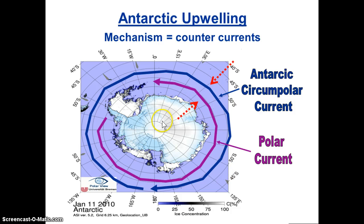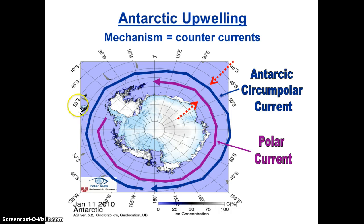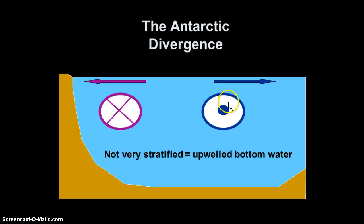Here they are. We have the wind from the polar high to the low driving a current going around Antarctica in a clockwise path — that's the polar current. The wind pattern between the subtropical high and the low drives the Antarctic circumpolar current going the other way. Since there are no continents in their way, they are continual and very strong. We have one current going this way and one going against it — we call that counter-currents. What is the consequence of that?